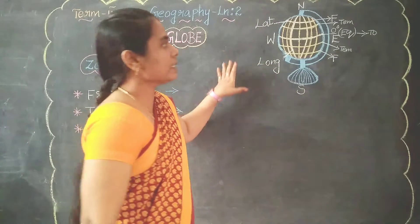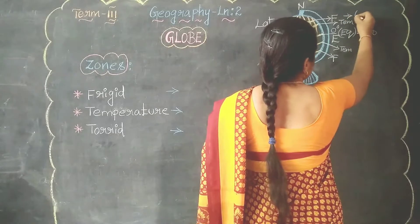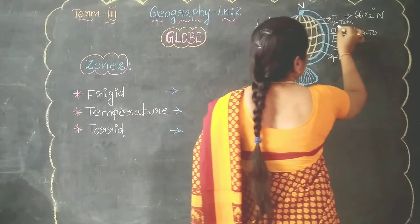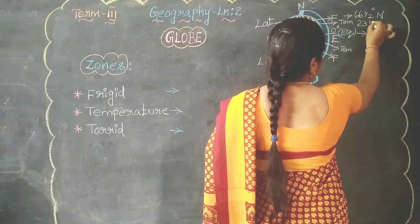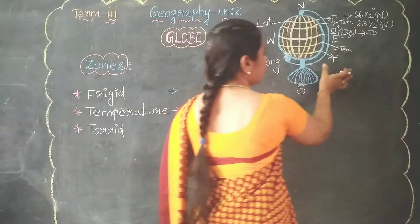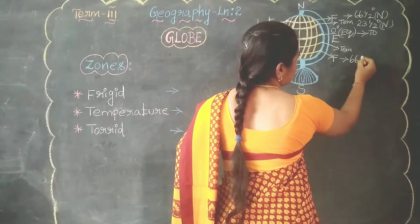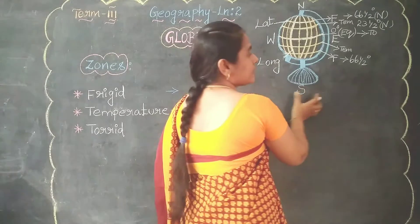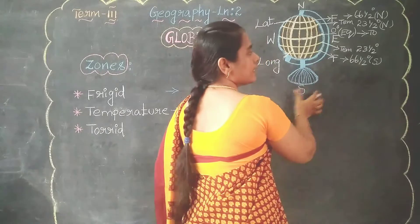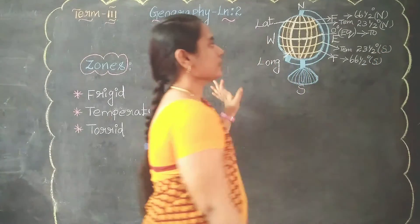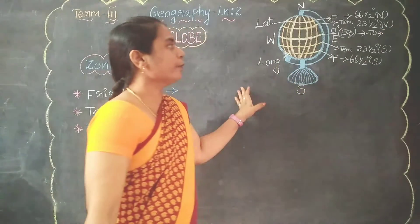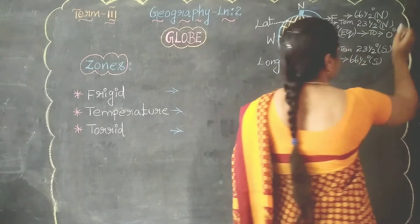Let me state the degrees of each zone. The frigid zone contains 66 and a half degrees, and it is on the north side. The temperate zone is at 23 and a half degrees north. Similarly, the frigid zone on the south side is also 66 and a half degrees south. The torrid zone is at exactly the equator — 0 degrees.